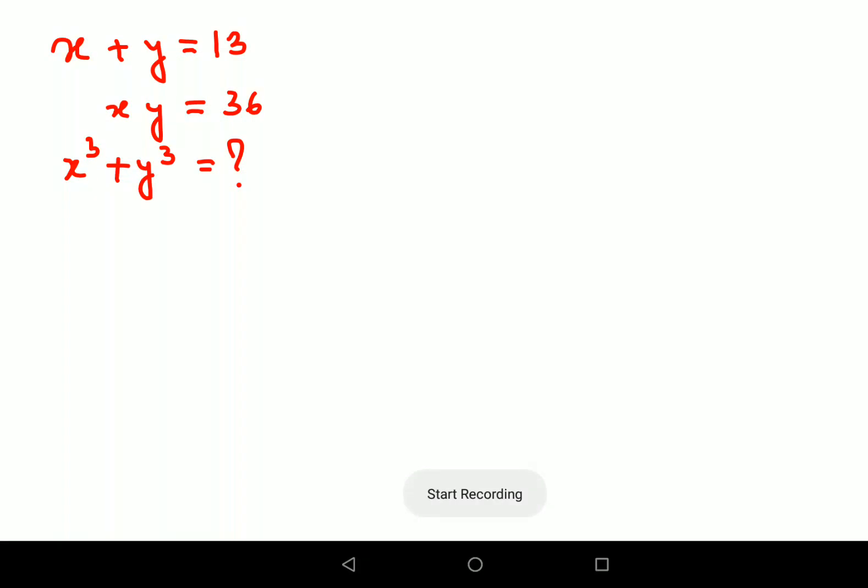Welcome everyone. Today we're going to solve a very nice Olympiad question. The question is x plus y equals 13 and xy equals 36, and we need to find the value of x cube plus y cube.